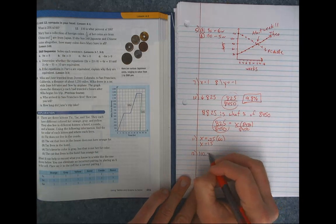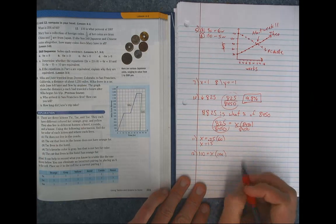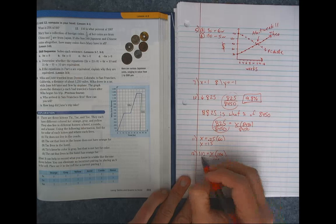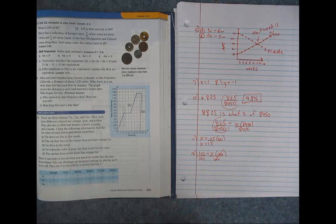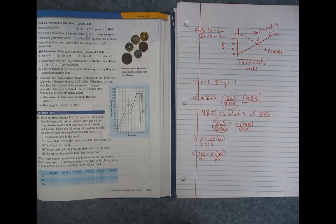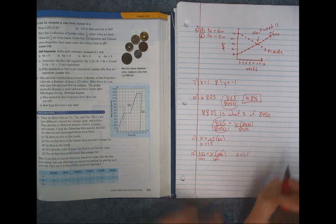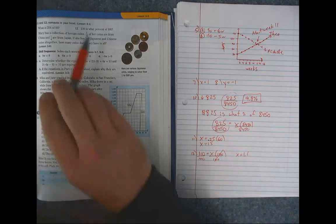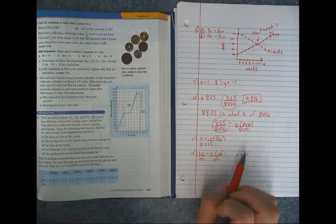And then number 12, 110 is what percent of 100? Solve it out. Now we do have to get X by itself. So you're going to divide by 100. So 110 divided by 100. You get 1.1. But don't forget to read the question and make sure you've answered it. It says 110 is what percent? So we're giving an answer that's a percent.